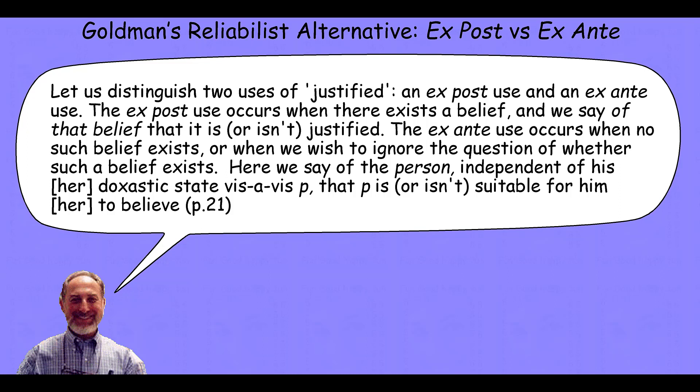Ex-post justification occurs when there exists a belief and we say that that belief is or isn't justified. Ex-ante occurs when no such belief exists and when we wish to ignore the question of whether such a belief exists. Here we say of the person, independent of his or her doxastic state vis-à-vis that proposition, that it is or isn't suitable for them to believe. The idea is: what would you be justified in believing regardless of whether or not you believe it? I'll capture that with my notion of ex-ante justification. My notion of whether or not you were actually justified about beliefs that you actually have, I'll capture that with the ex-post notion.